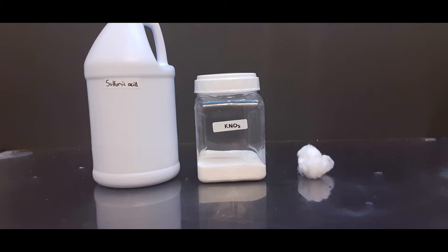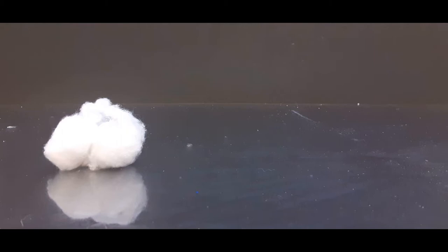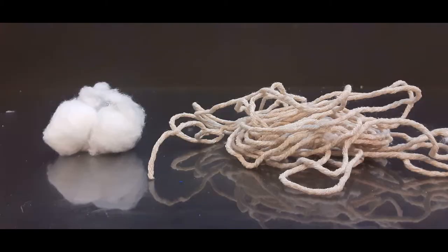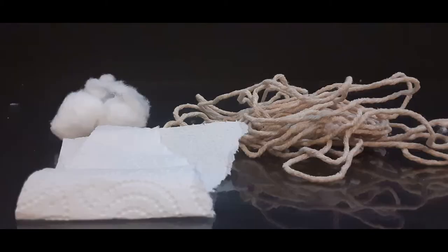In today's video, we're going to be making nitrocellulose. Nitrocellulose is an explosive commonly used in things like dynamite and gunpowder. It can be derived from things like cotton, rope, and paper - really anything that has cellulose. This is the process for making it.